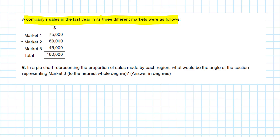But let us read the requirement now. We see that we need to deal with a pie chart. In a pie chart representing the proportion of sales made by each region, what would be the angle of the section representing market number three? So think about that for a minute.